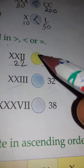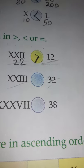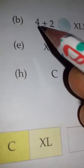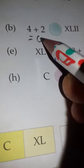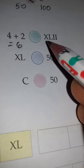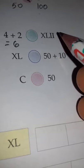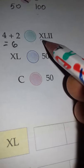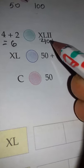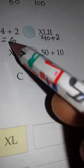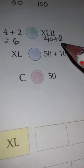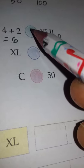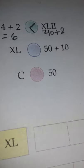Part (b): 4 plus 2, which equals 6. On the other side it's given as XLII - XL means 40 and II means 2, so 42. Now one side is 6, the other side is 42, so which side is greater students? Very good, XLII.